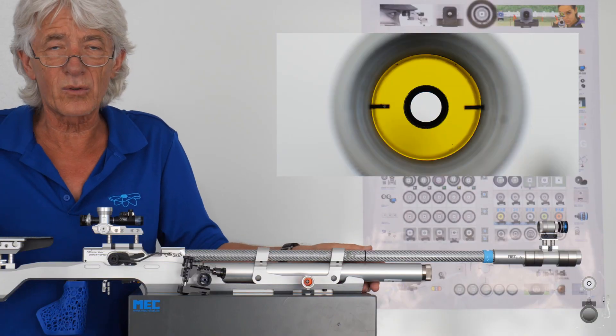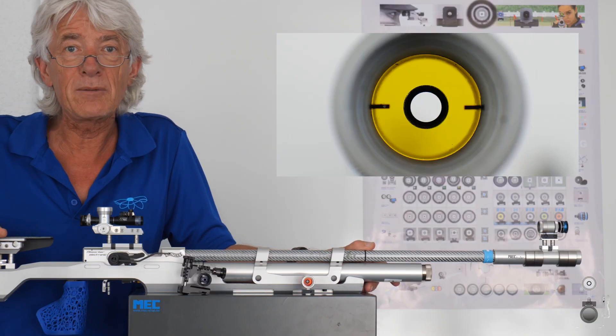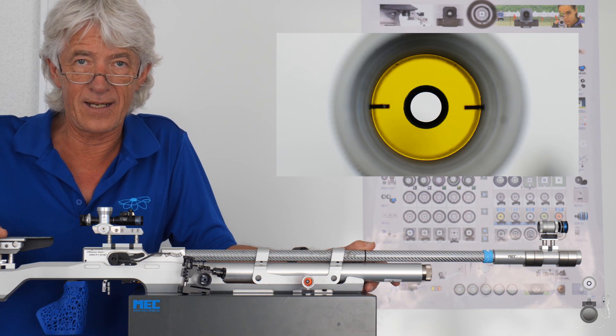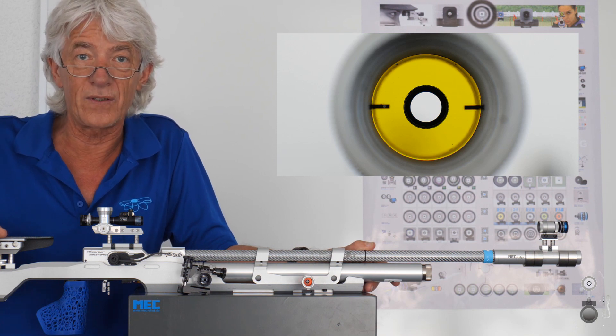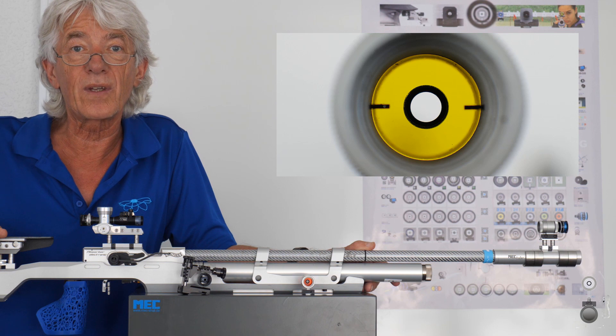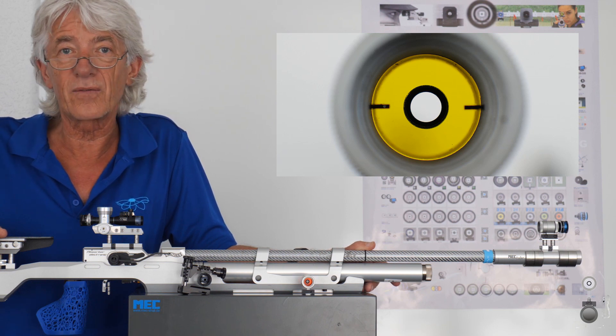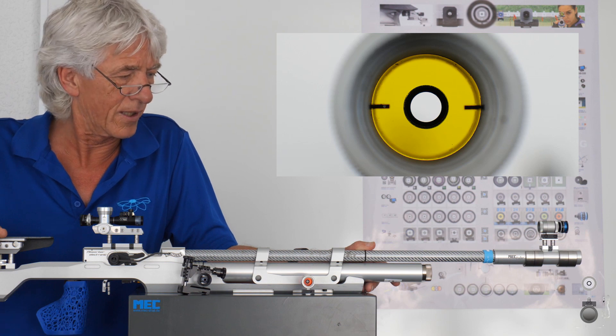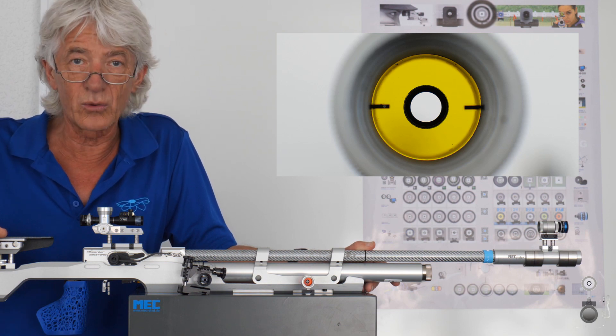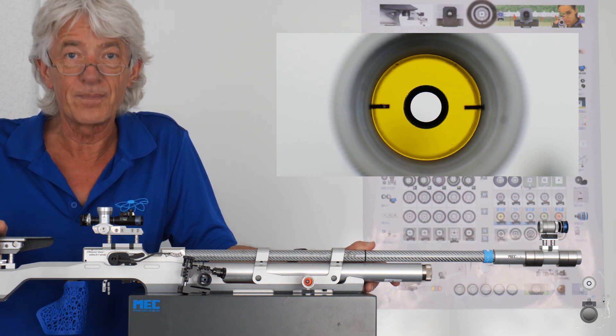With this instrument you can aim as exact as with an expensive rifle scope. If you see the whole competition, this means if you shoot 60 shots, you may be even more accurate with a sports rifle sight.